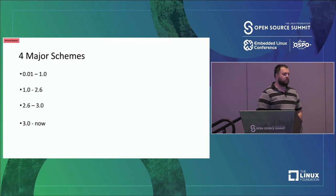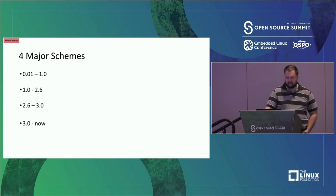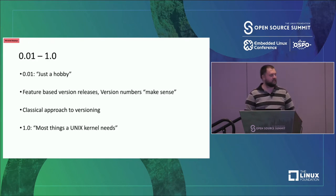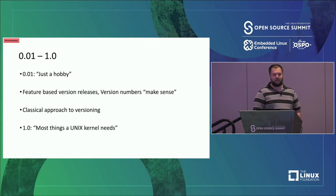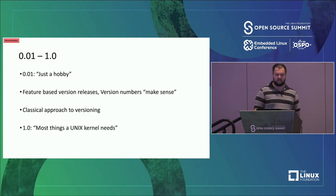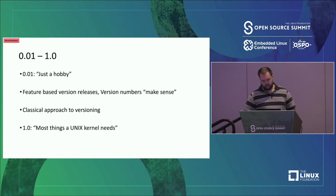I'll talk about how the kernel used to do releases, how it does releases now, and the evolution of kernel versioning. The first step was Linus basically saying 'this is just a hobby, can you guys help me?' It started with version 0.01 and versioning numbers worked like you'd expect in a small software project — small feature, bump a little; bigger feature, bump a lot.